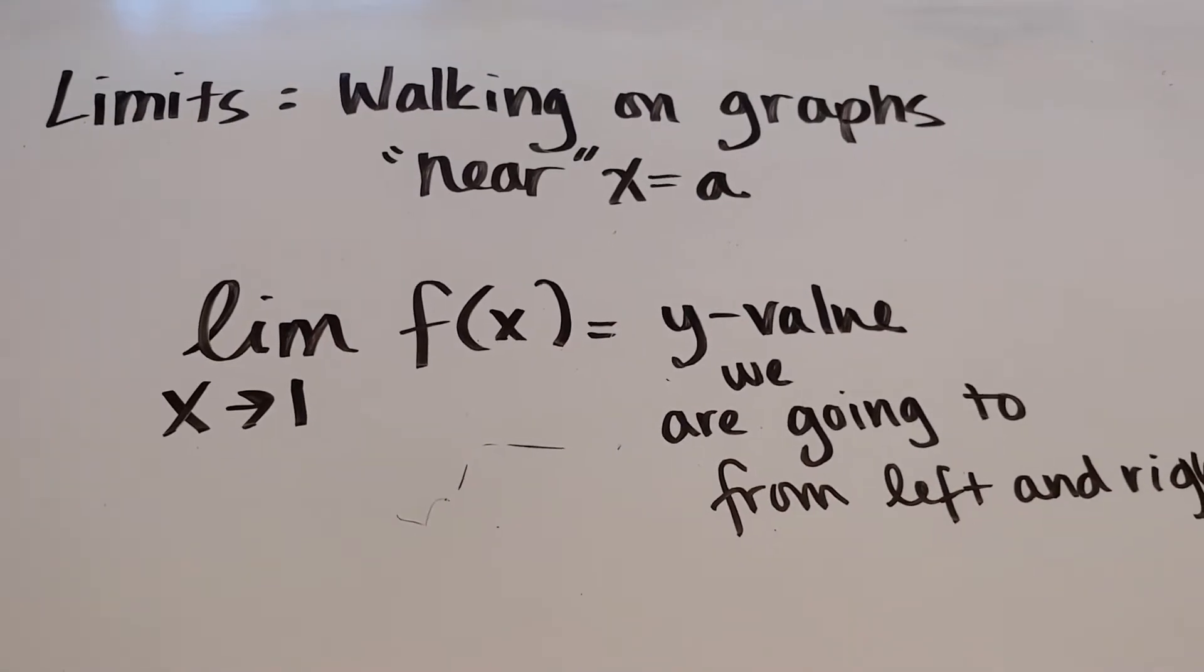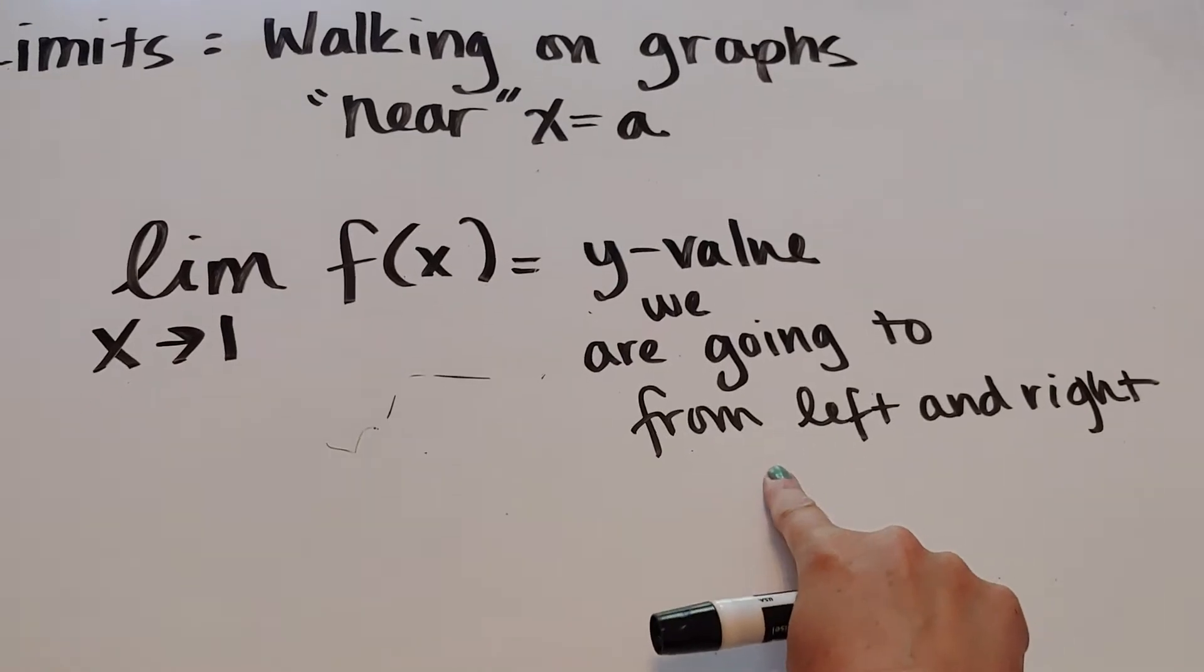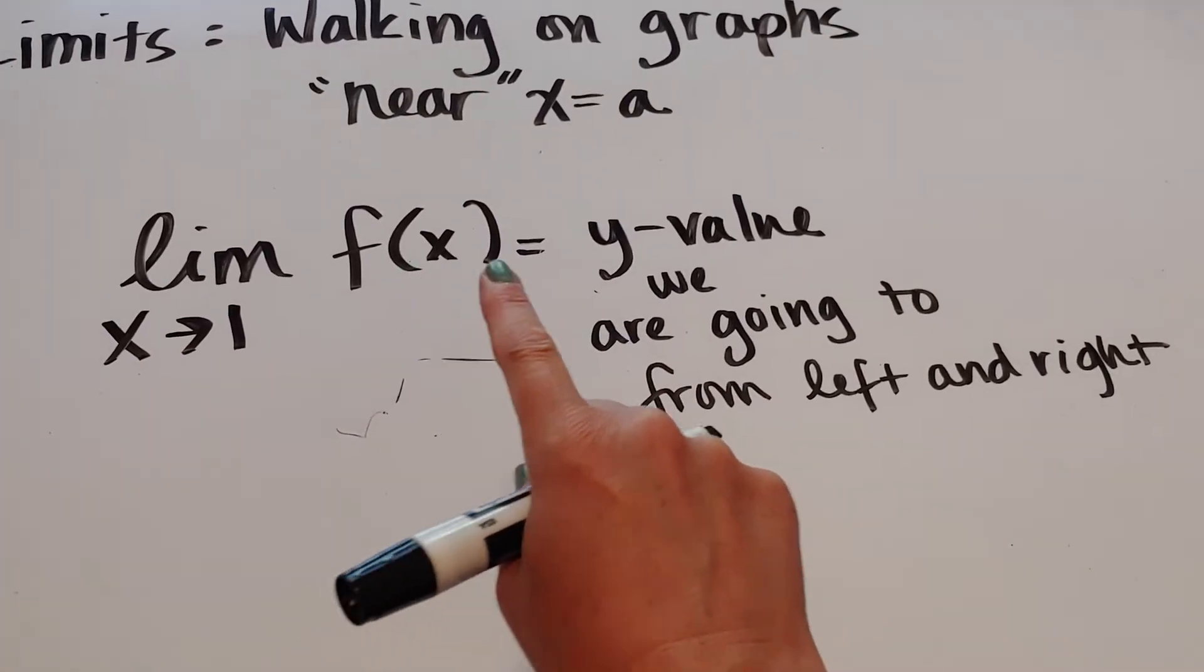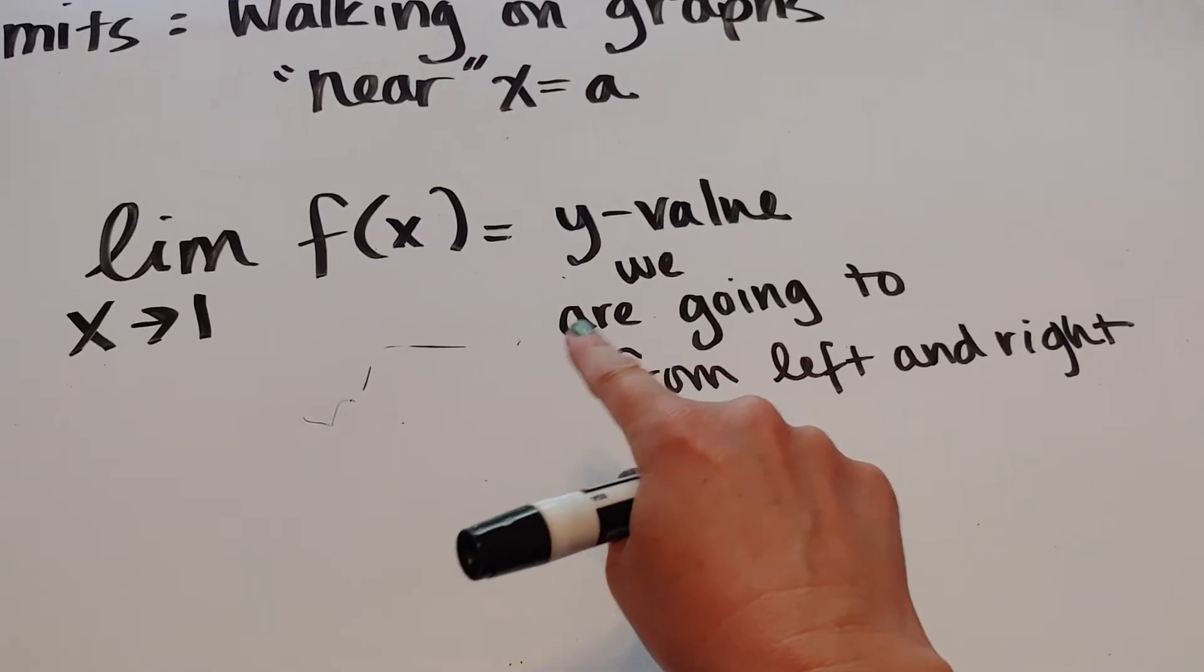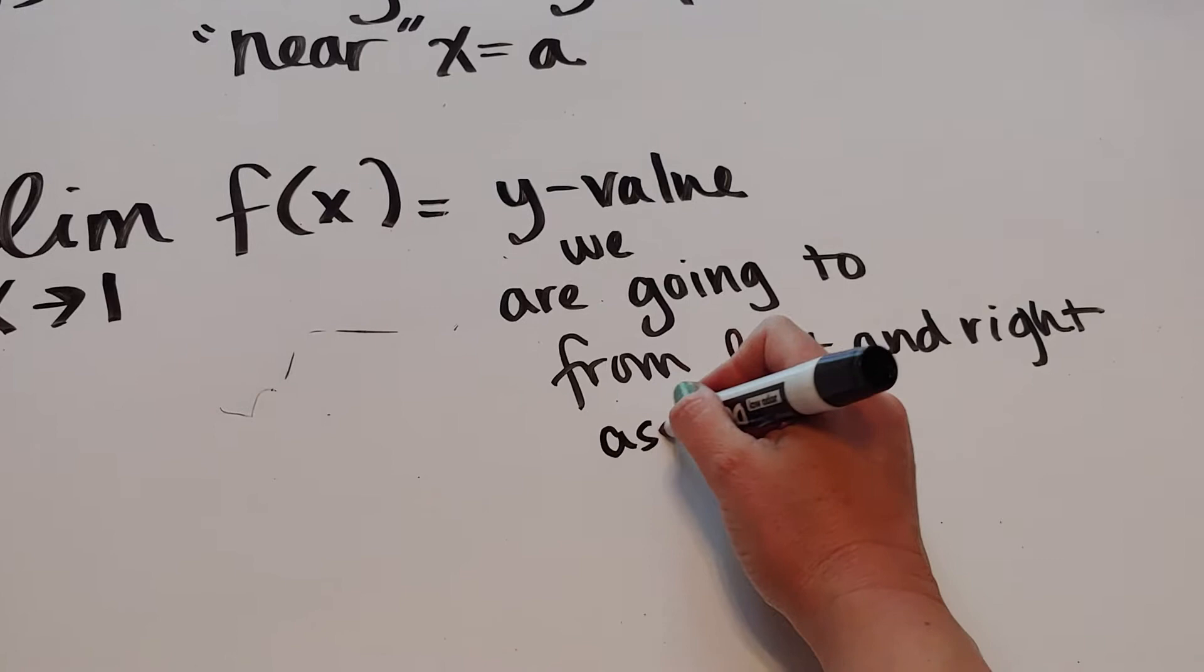In this video, we're going to be focusing on finding limits around jumps. And you'll notice I changed my definition here just a little bit. So it says the limit as x approaches 1 of f(x) equals the y value we are going to from the left and the right, assuming they match.